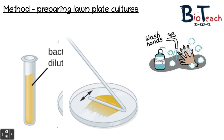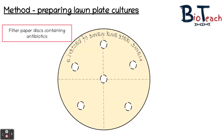Once you have spread it adequately, you will replace the lid of the petri dish and leave the lawn plate for around five to ten minutes — this allows the broth to be absorbed onto the surface of the nutrient agar. After the rest period, you will then place filter paper discs containing your antimicrobial substances on the plate. Use forceps to dip the filter paper discs into a test solution so the disc is wet, then shake off any excess moisture, and place them gently onto your lawn plate culture. You may also use a pipette to apply a smaller volume of solution onto the disc.